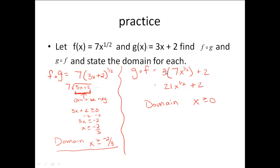When I did g of f, I started by writing my g equation as 3, empty set of parentheses, plus 2. Then I plugged in the f equation here. Now this one, I can take that 3 times 7 because this 1 half is not attached to the 7. So I get 21x to the 1 half plus 2.